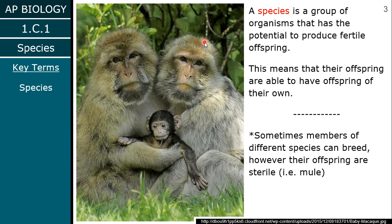To talk about how to create a species, we need to talk about what a species is. A species is a group of organisms that can reproduce together, and when they reproduce together, they have fertile offspring — the offspring need to be able to have offspring of their own.